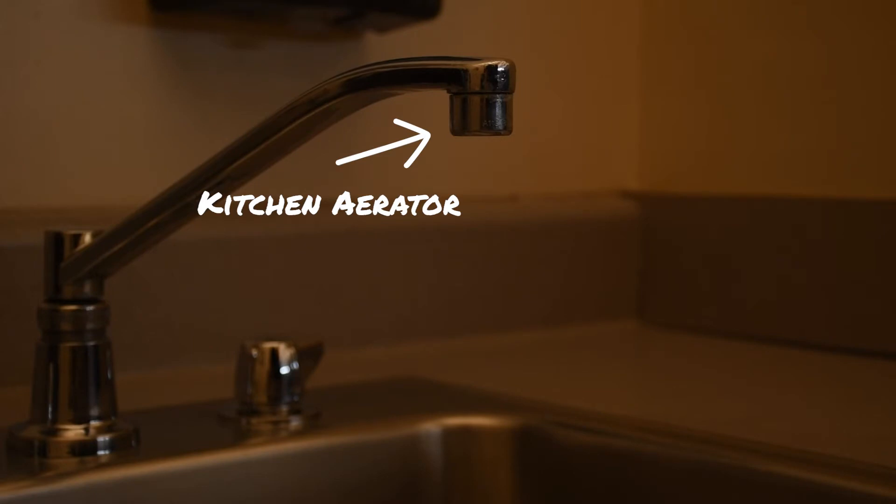Under your kitchen or bathroom faucet, there's a small water restrictor that helps limit the flow of water and produces a nice stream.